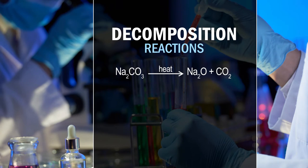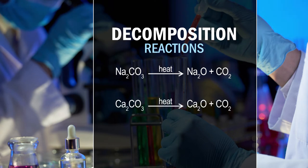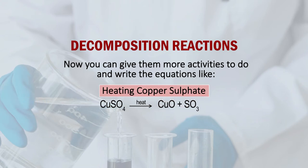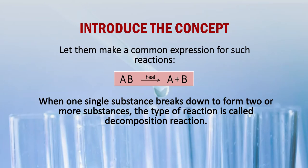They will write: heating sodium carbonate gives Na₂O + CO₂ (carbon dioxide emerging). Heating calcium carbonate, CaCO₃, gives CaO + CO₂. In both equations, when they heat one substance it breaks into two. Then give them more chemicals — ask them to heat ferrous sulphate and copper sulphate and write the equations: 2FeSO₄ → Fe₂O₃ + SO₂ + SO₃; CuSO₄ → CuO + SO₃. When you ask them the commonality in all four equations, they find that when AB is heated it breaks into A and B — here you introduce decomposition: when one single substance breaks down to form two or more substances, it is called a decomposition reaction.